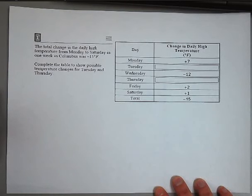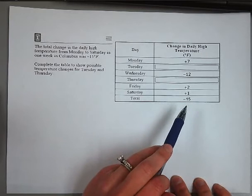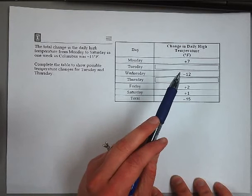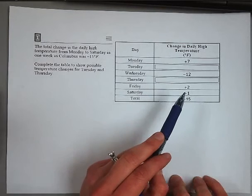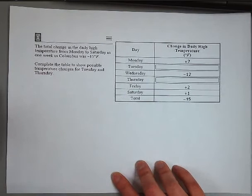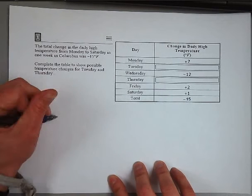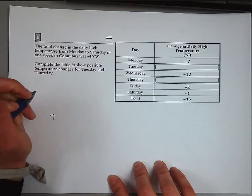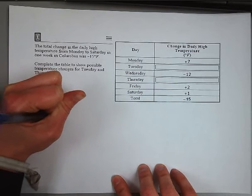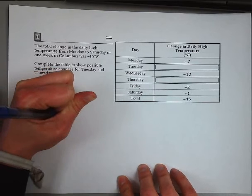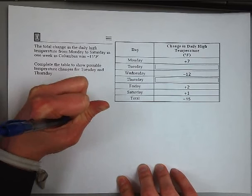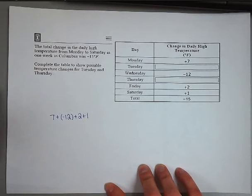Before we can figure out what Tuesday and Thursday are, we want to add up the other days — Monday, Wednesday, Friday, and Saturday — not including Tuesday and Thursday. So we're going to take positive 7 for Monday, plus negative 12 for Wednesday, plus positive 2, plus 1 for Friday and Saturday, and add those up to see the total for the four days we know.